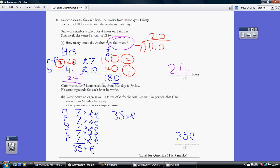So just working the other way around, 20 hours in the week at £7 an hour is £140. Four hours on a Saturday, £10 an hour is another £40. Add the two together, you're £180 earned in total.